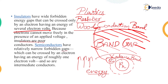Semiconductors have relatively narrow forbidden gaps — remember the word 'relatively,' as we are comparing to insulators. The band gap is relatively narrow compared to insulators, but relatively broader compared to metals or conductors. This gap can be crossed by an electron having energy of roughly one electron volt, and so semiconductors are intermediate conductors.